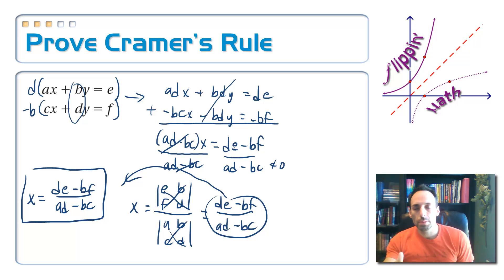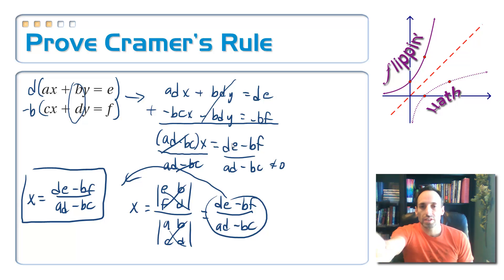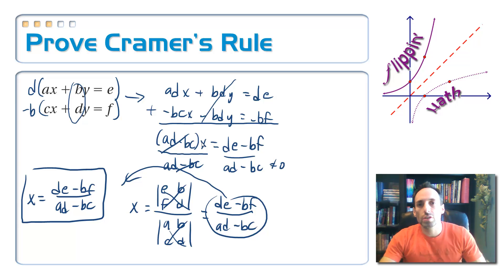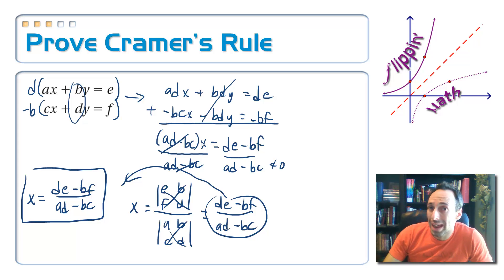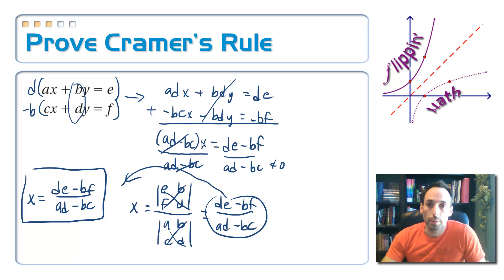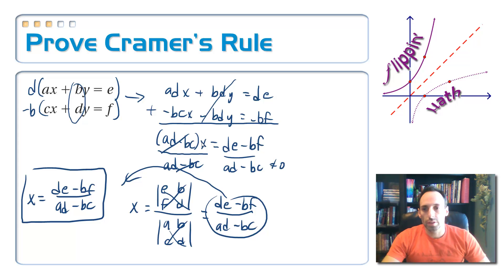Keep in mind that when Cramer was doing this, he was doing it without matrices, so this is exactly how his rule was probably formulated. There you go — just proved it for x. I'll leave it up to you as an enrichment activity to prove it for y. You do roughly the same thing: just eliminate the x's and do the same kind of process to find the value of y.